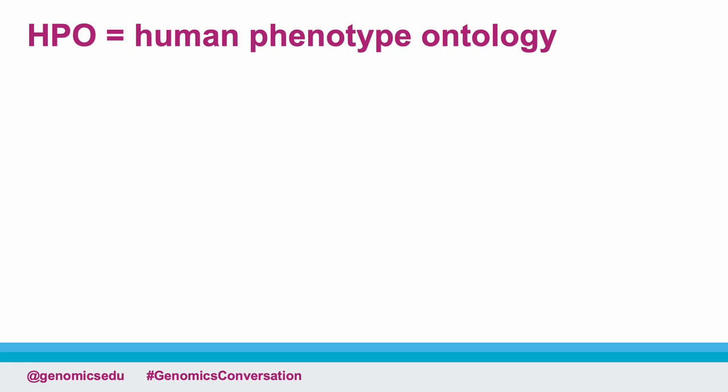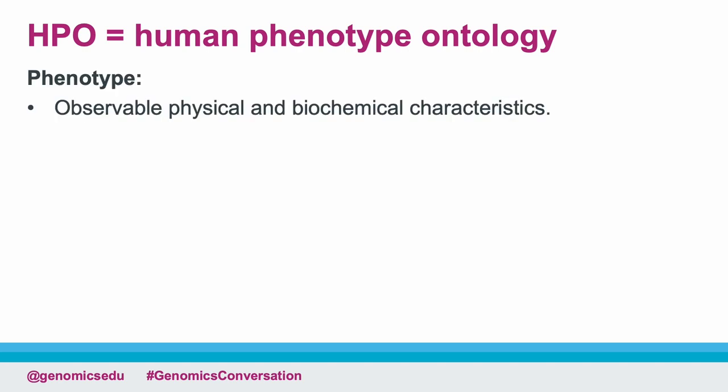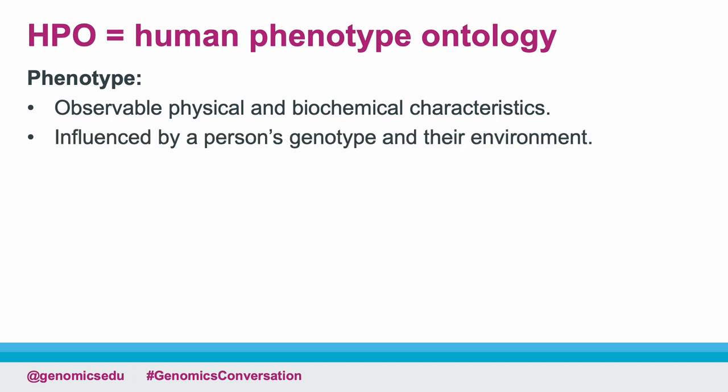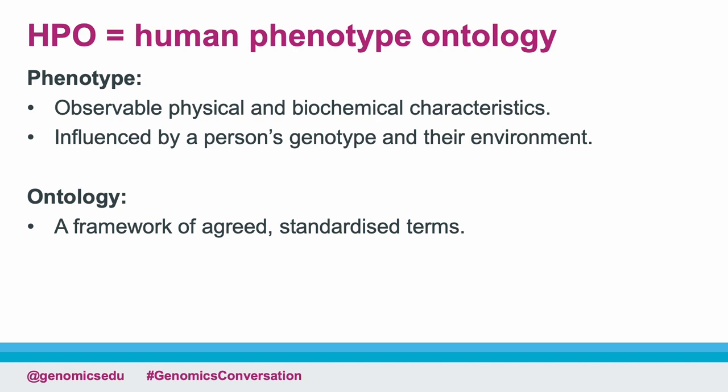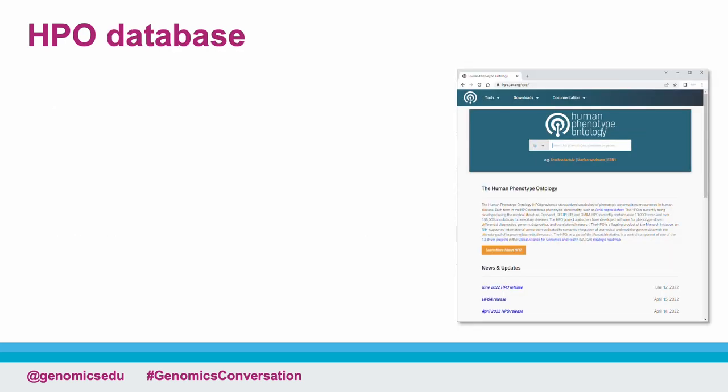You may have previously heard the term HPO, which stands for Human Phenotype Ontology. As a quick recap, phenotype describes the observable physical and biochemical characteristics that are directly influenced by a person's genotype and the environment. Ontology is a term used in computer and information science to describe a framework of agreed, standardised terms. The HPO database is a collection of agreed terms used to describe phenotypic features.